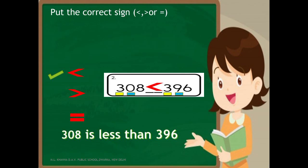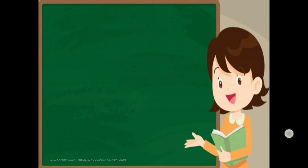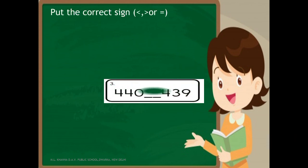Next question: compare 440 and 439. The digits at the hundreds place are the same, so we compare the digits at the tens place: 4 tens and 3 tens. 4 tens are greater than 3 tens. That means 440 is greater than 439.